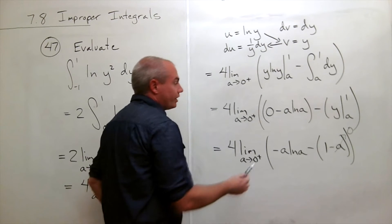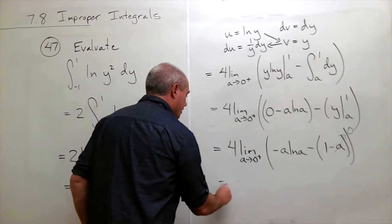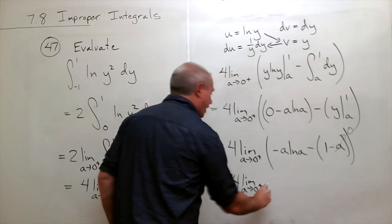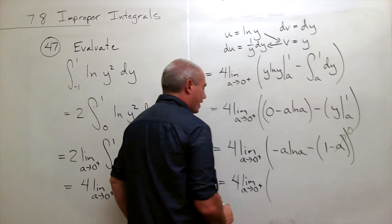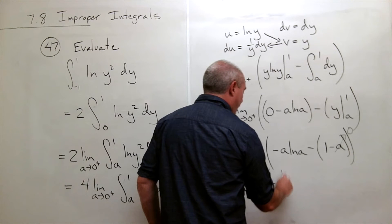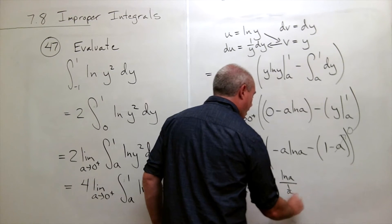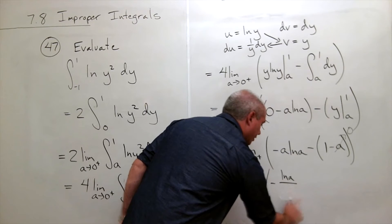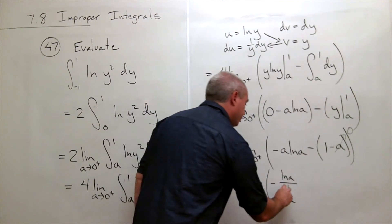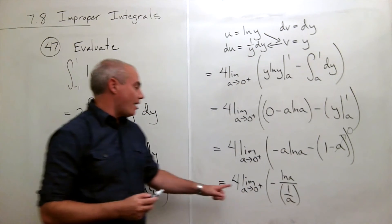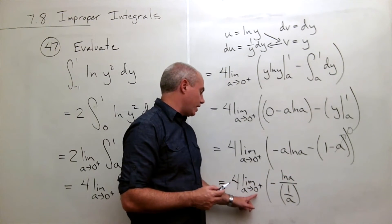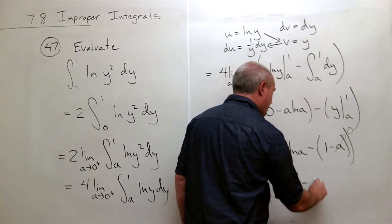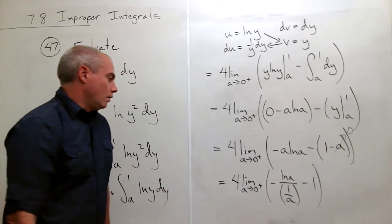But to use L'Hopital's rule, I really need to get it in a little bit different form. So I'm going to write this as 4 times the limit as a goes to 0 from the right of, this time I'll write it as negative ln of a on top and on the bottom I'll write it as 1 over a. So I haven't changed anything at all. So I haven't changed anything, but now the form is on the top I've got negative infinity, and on the bottom I have infinity. So it's ready to use L'Hopital's rule on. What's left over here? Just a minus 1.